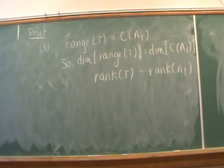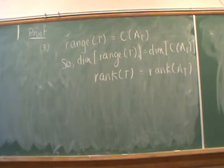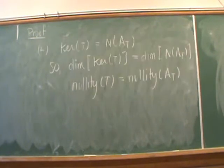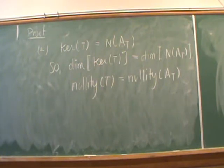For part 3, we know that the range of T equals the column space of our standard matrix. As subspaces they have the same number of basis vectors, so the dimension of the range equals the dimension of the column space. The dimension of the range is the rank of our linear transformation, and the dimension of the column space is the rank of A sub T. Similarly, applying the same procedure to the kernel and null space yields part 4: the dimension of the kernel equals the dimension of the null space, giving us the nullity of T equals the nullity of A sub T.